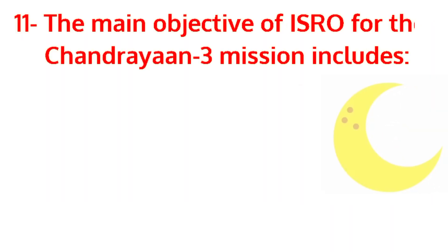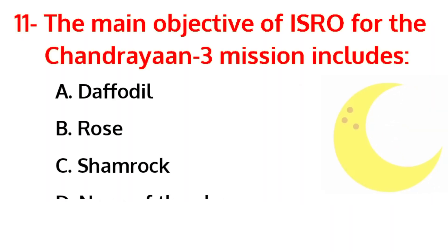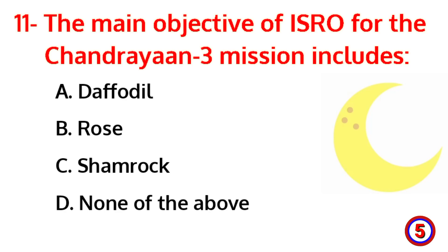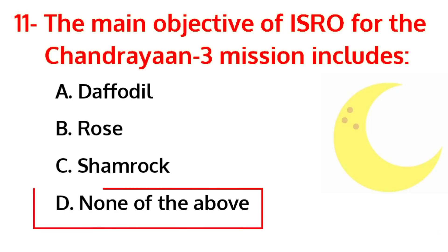The main objective of ISRO for the Chandrayaan-3 mission includes? The correct answer is option D, none of the above.